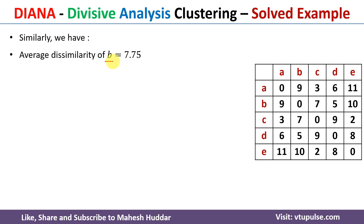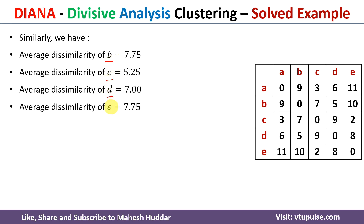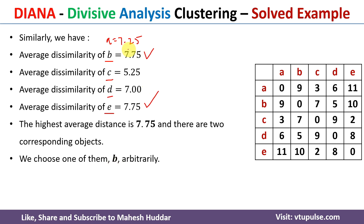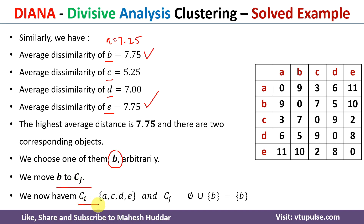Once we compare all average dissimilarities, the values for B and E are maximum. Since two data points share the same maximum value, we randomly select one — we select B. B is removed from Ci and placed into Cj. After this initial iteration, Ci = {A, C, D, E} and Cj = {B}.